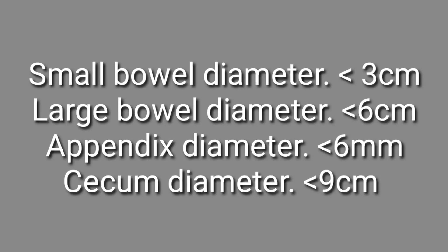The normal small bowel diameter should be less than 3 cm on abdominal radiograph. The large bowel should be less than 6 cm, and the appendix less than 6 mm — beyond 6 mm, appendicitis should be considered. The cecum should be less than 9 cm. Megacolon is defined when the large bowel dilates more than 9 cm, though some sources apply the term from 6 cm onward. When it reaches 9 cm or more, there is a risk of perforation and immediate surgical emergency is required.